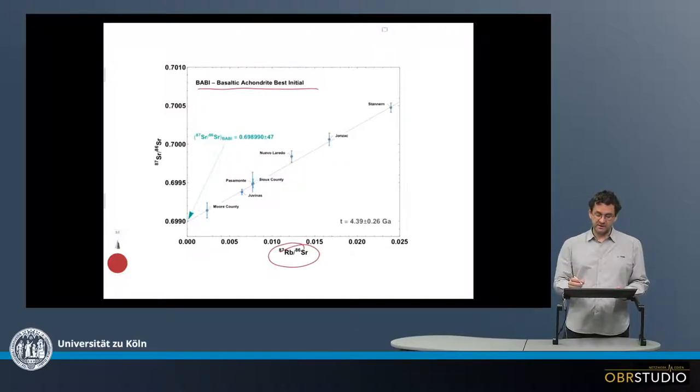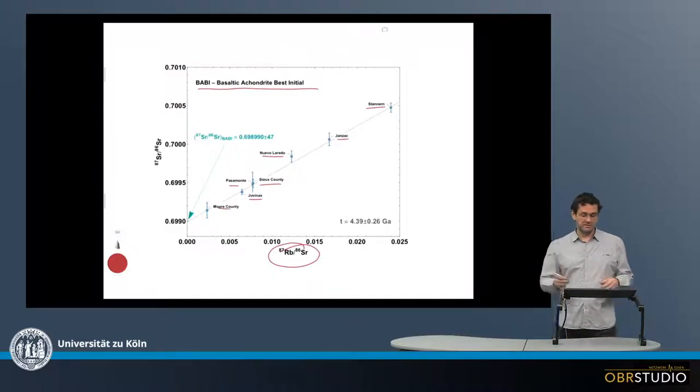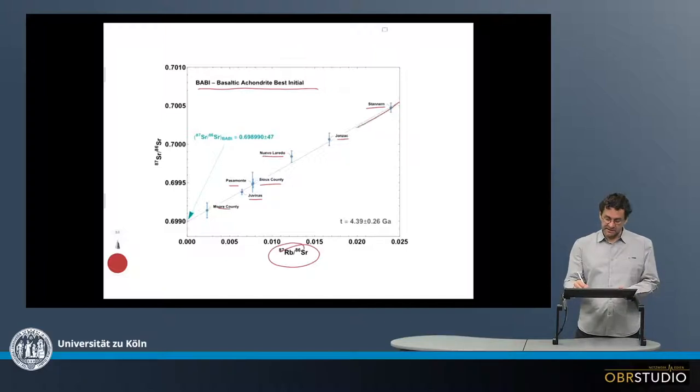So that's what's done here. A number of basaltic achondrites are used, like Stannern, Juvinas, Nuevo Laredo, Sioux County, Pasamonte, Moore County—sometimes you might see a couple more, doesn't really matter. And then they define an isochron here,